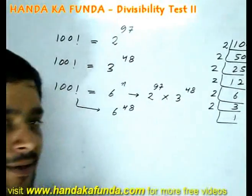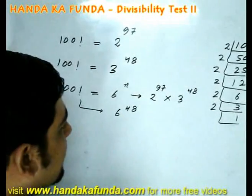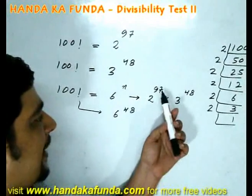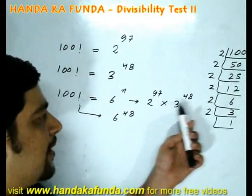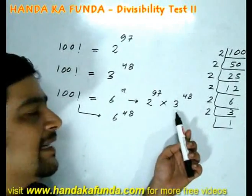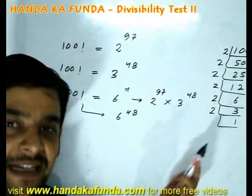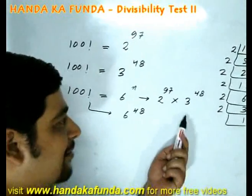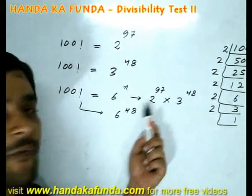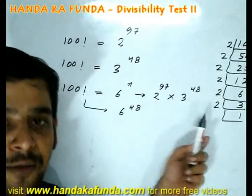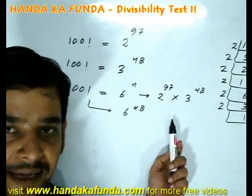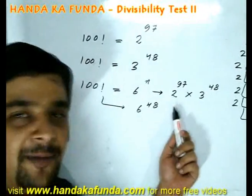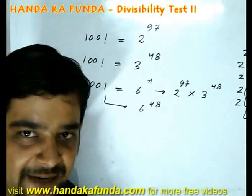Let's look at this a different way. Say there are 97 boys and 48 girls — how many couples can you form? You can only form 48 boy-girl couples; the remaining boys will be left out.